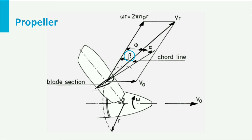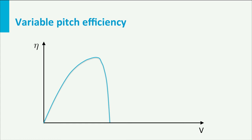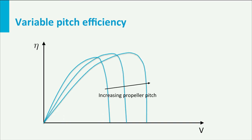Most modern propellers have a constant rotational speed and a variable geometric pitch. By varying the pitch of the propeller, the angle of attack and thereby the thrust can be controlled, and in each flight condition the optimum setting can be selected. If one would make a diagram with propulsive efficiency as a function of airspeed for a fixed setting, it would have a specific shape where at one flight speed the efficiency is maximal. However, if you draw this same graph for various propeller pitch settings, you can see that the optimum shifts, making it possible to select maximum efficiency at each flight speed by changing the propeller pitch.